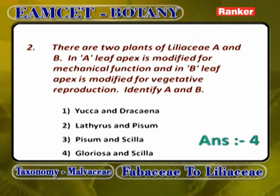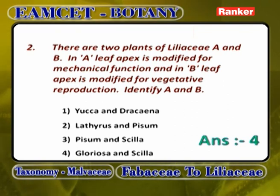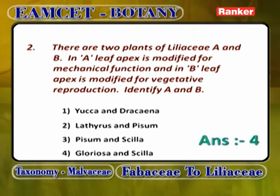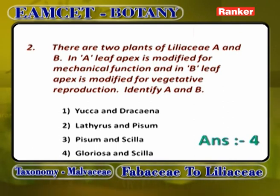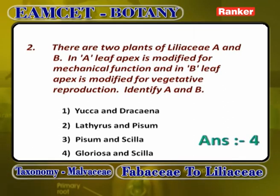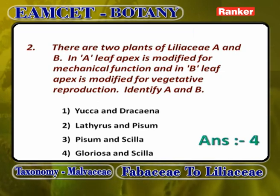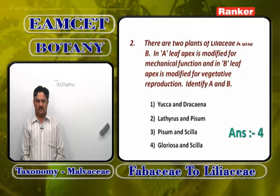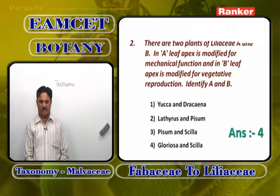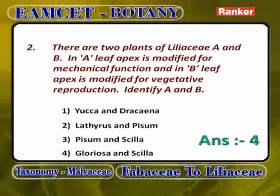Yucca and Dracaena are fiber-yielding plants of Liliaceae with anomalous secondary growth. Pisum belongs to Fabaceae, Scilla belongs to Liliaceae. So the answer is the fourth option — Gloriosa and Scilla.